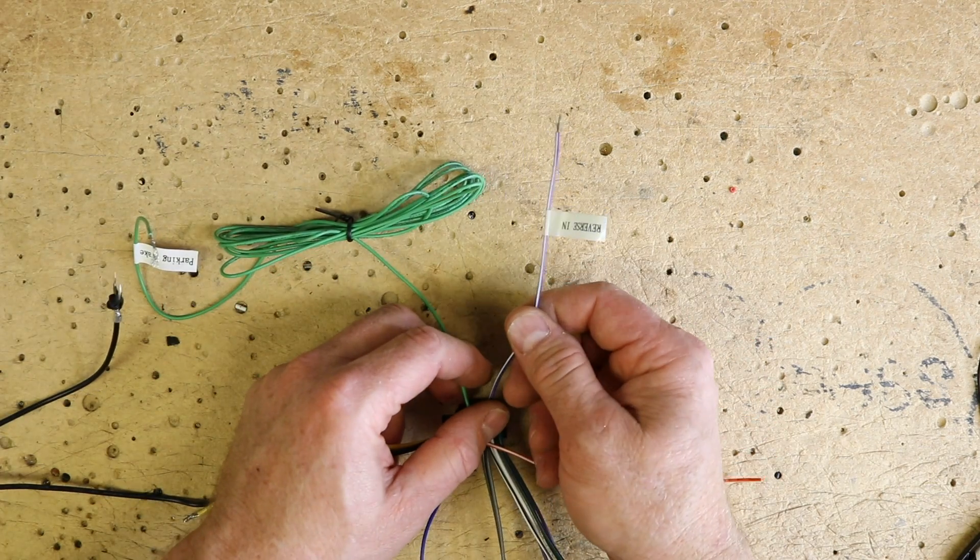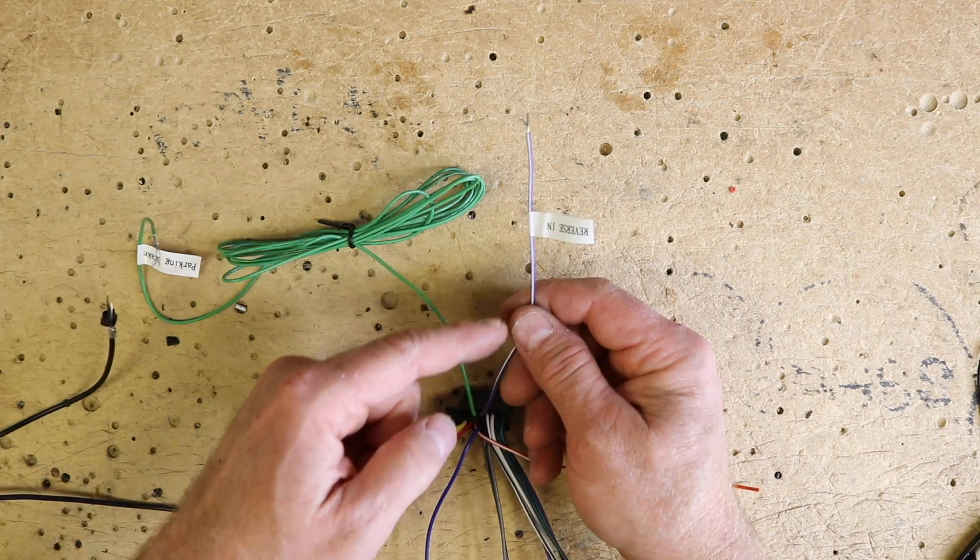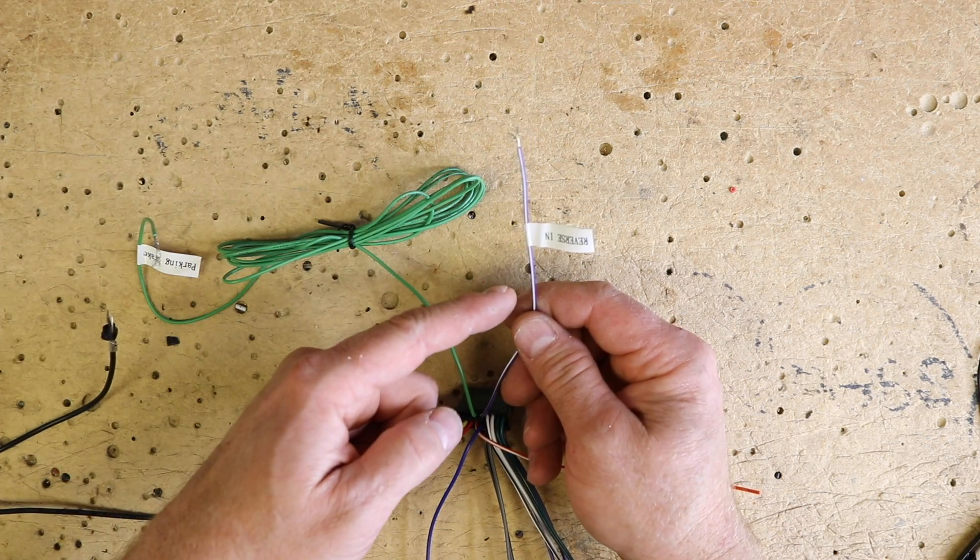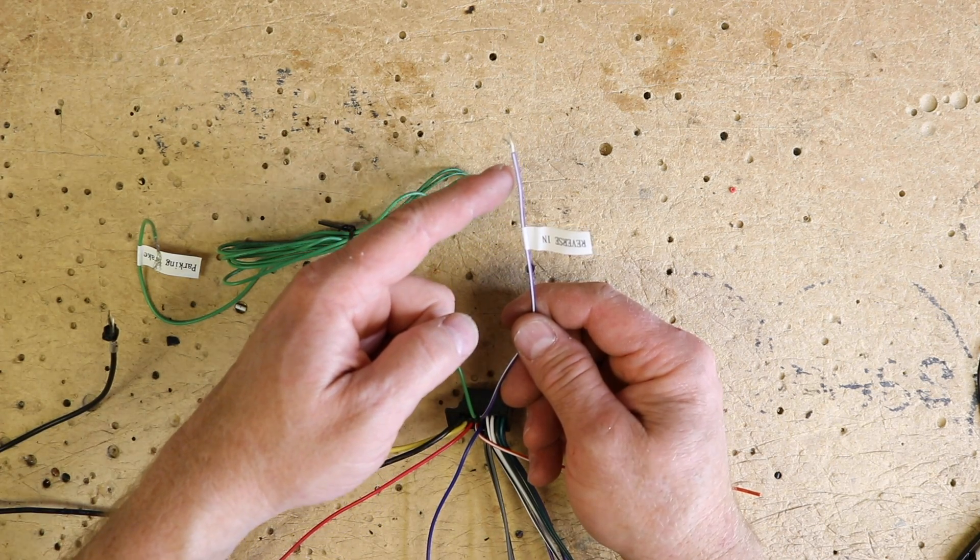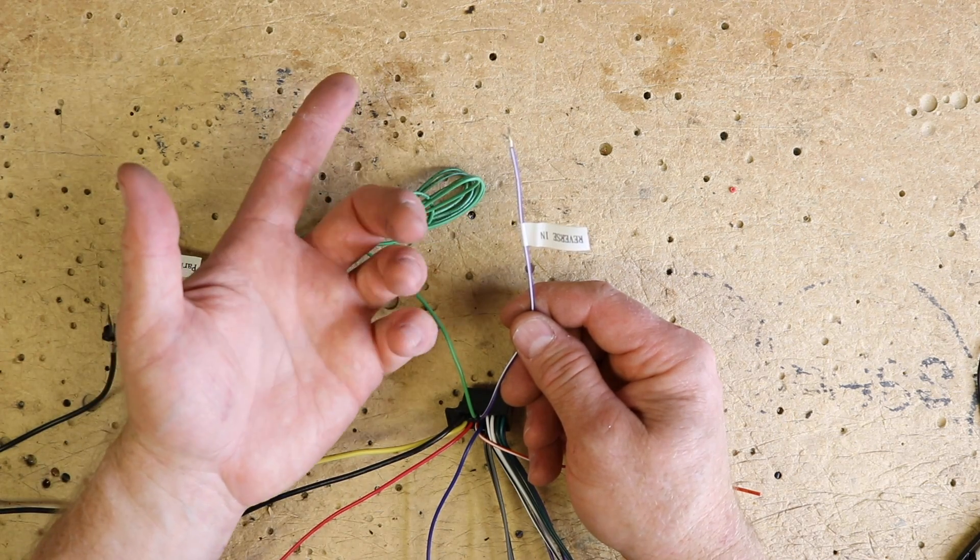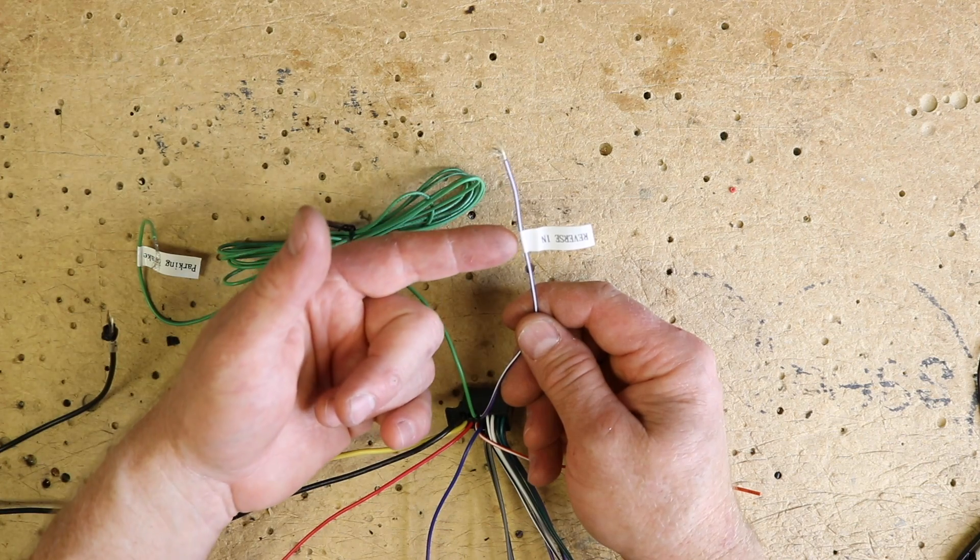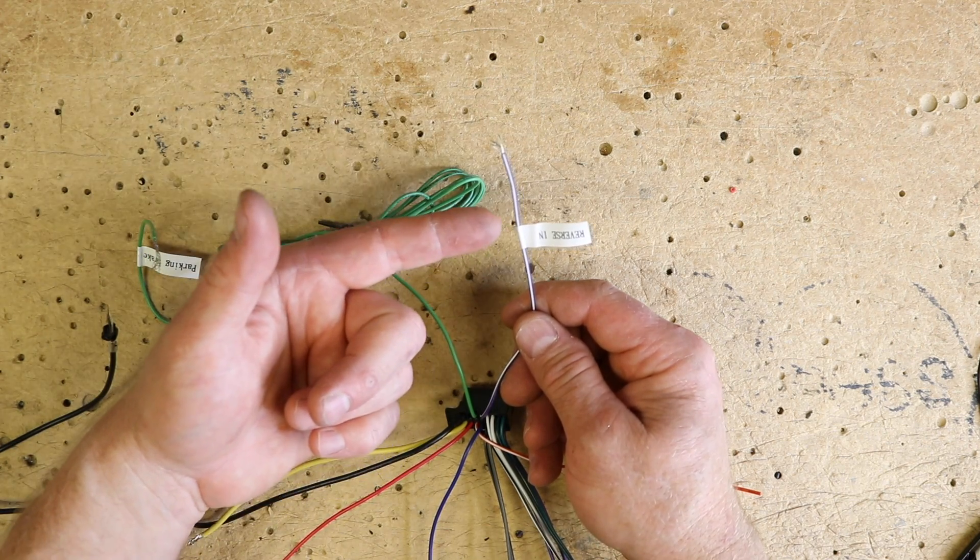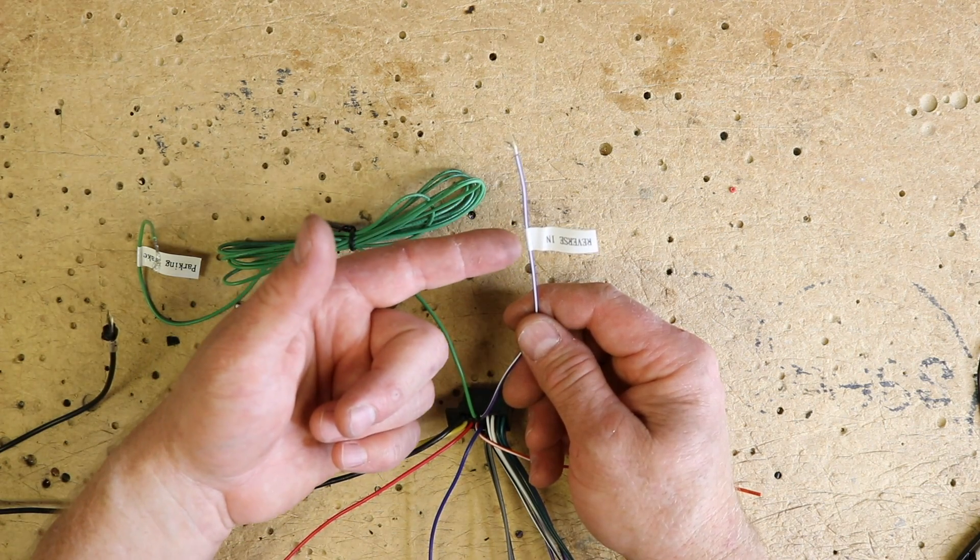Next is the purple white. Purple white is reverse in. This wire needs to get connected if you're planning on putting in a backup camera. What this gets is a positive 12 volts every time your car goes into reverse. Now depending on the car, if you're using, let's say, a car that requires a smart harness, this will get connected into the smart harness because smart harnesses generate reverse. If not, a lot of the times you can find this at the reverse lights themselves.